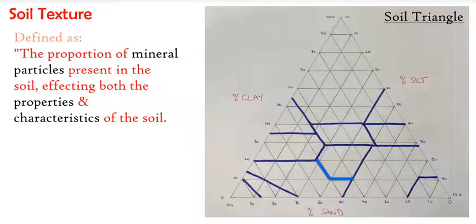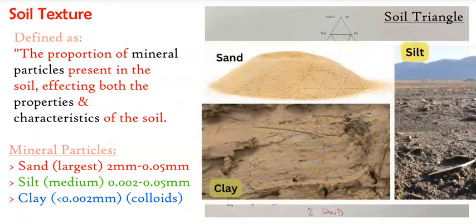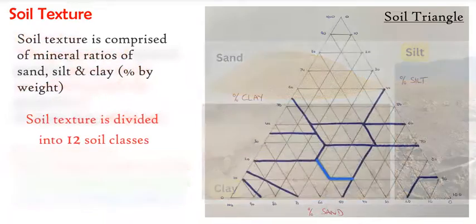Soil texture is defined as the arrangement and composition of the soil for its physical or mineral component or particles: the sand, silt, and clay. Sand is the largest particle, then silt is the medium-sized particle, and clay is the smaller-sized particle. Generally, soil is made up of these three components in different ratios and percentages, and that will create the soil texture that this triangle is going to calculate for us.